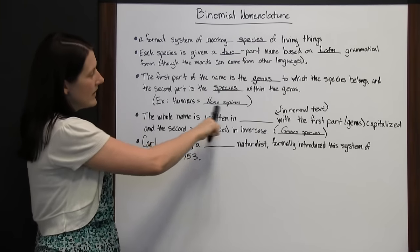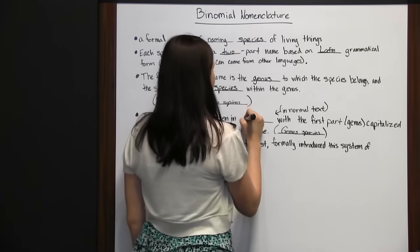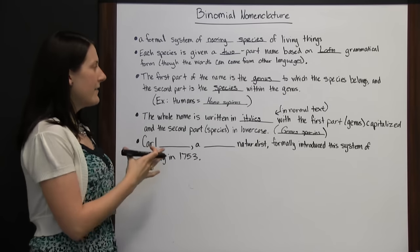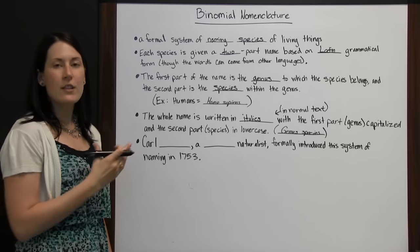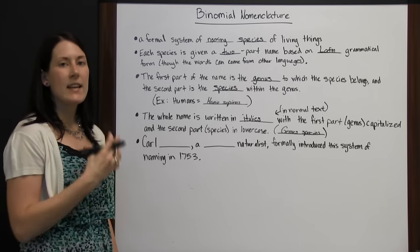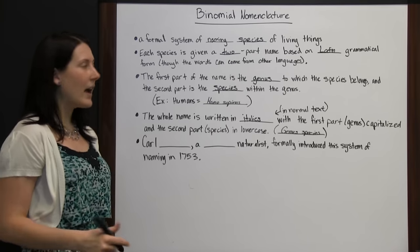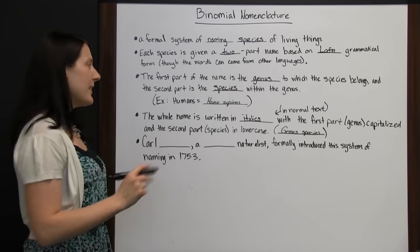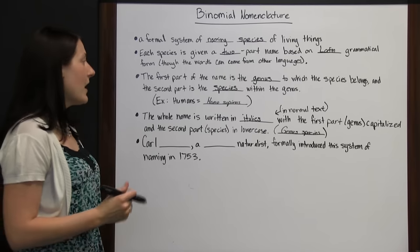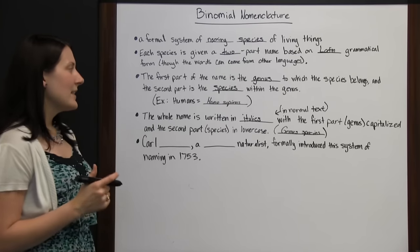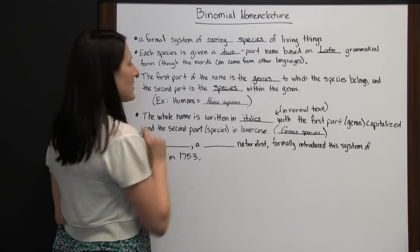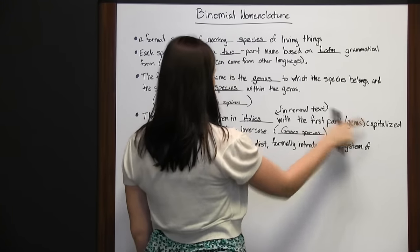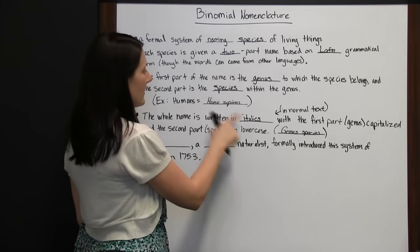Note how it is written: the whole name is written in italics. If you have the binomial nomenclature in an already-italicized sentence or paragraph, you would put just the scientific name in Roman typeface to set it off. But in normal text, you would italicize the whole scientific name — genus and species — with the genus capitalized and the species in lowercase.